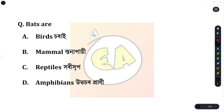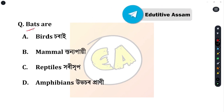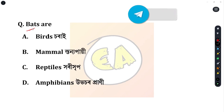Next question: bats are? What category do they belong to — like a cricket bat? Option A: birds. Option B: mammal. Option C: reptile. Option D: amphibians.